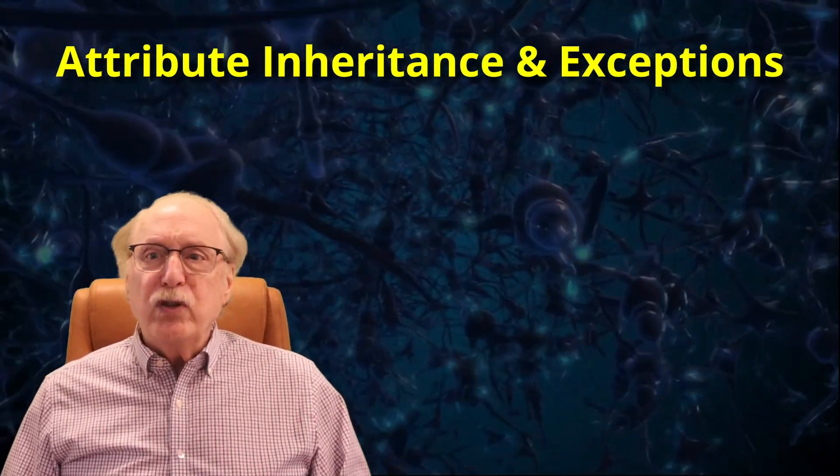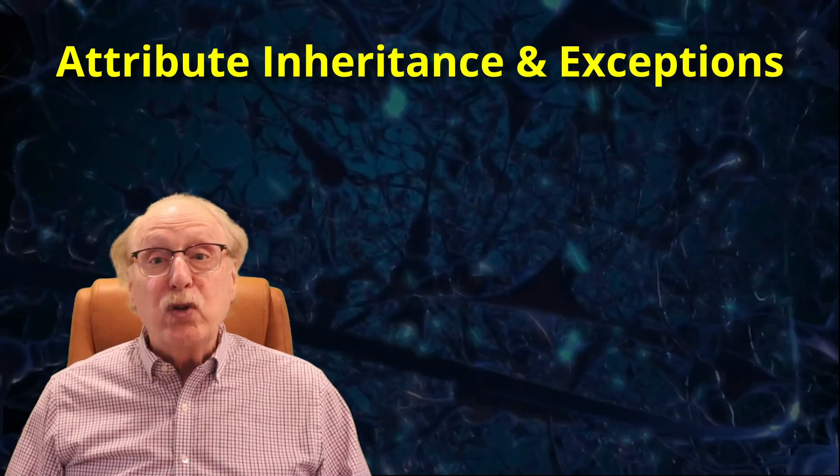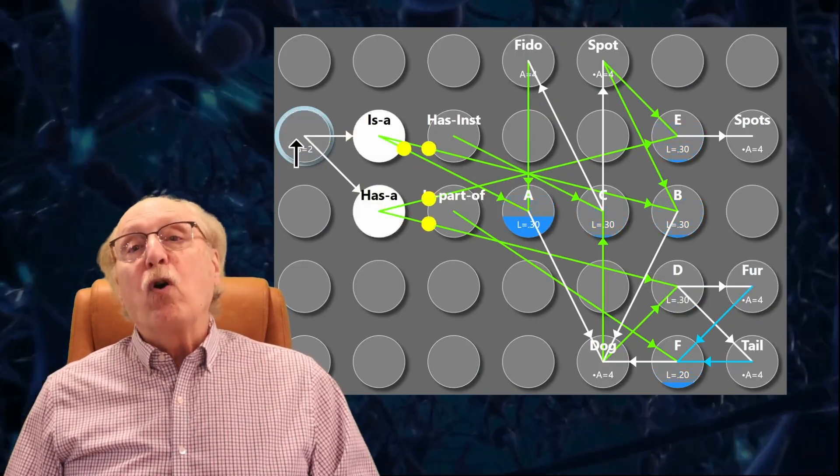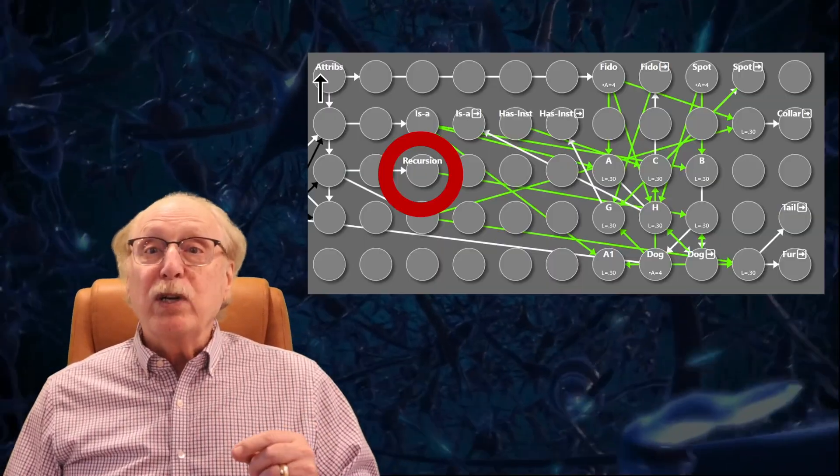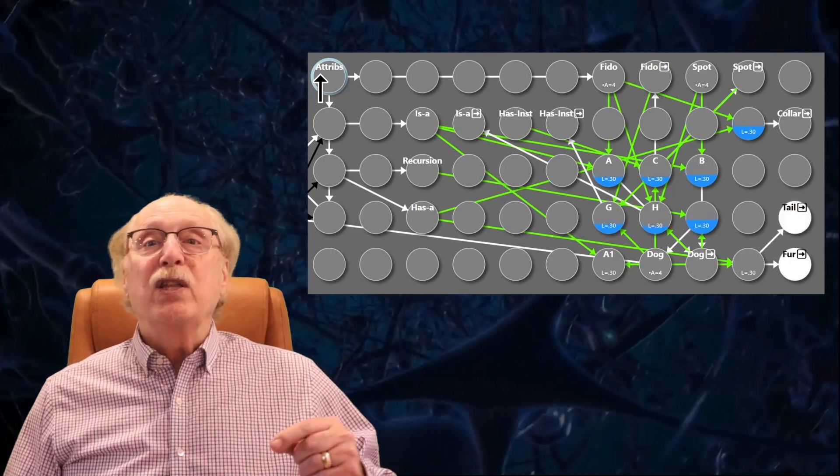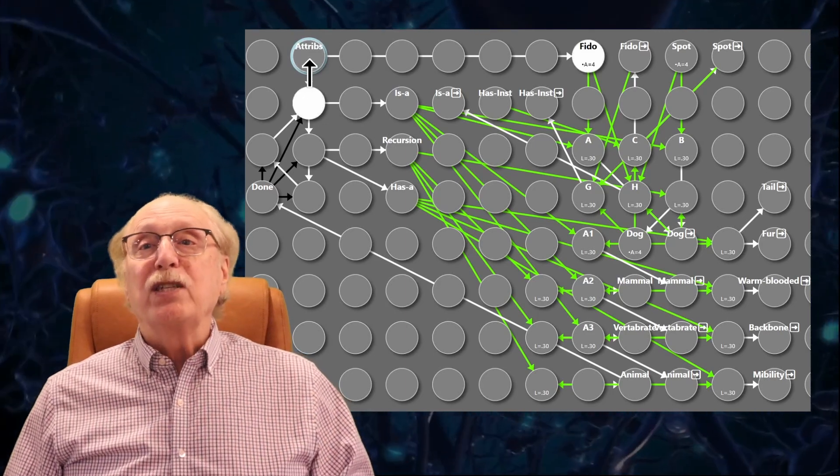We previously introduced inheritance. The idea is that if a dog has some attributes and Fido is a dog, Fido inherits those attributes as well. Unfortunately, when we separated neurons into inputs and outputs, we need to add more relationships so that the output of the first level query can be the input to the second level query. I call this the recursion relationship because it transfers the firing state of the output to the input and continues. With this addition, the inheritance process is working again.